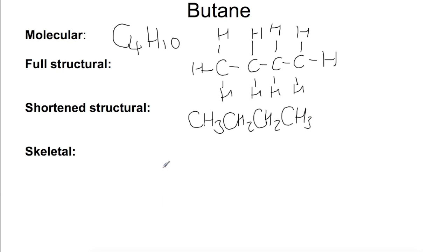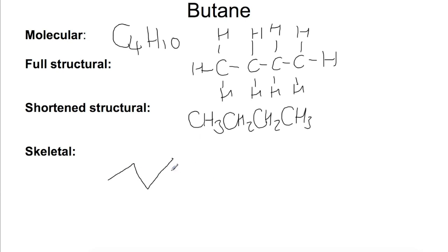For the skeletal formula we take out all of the bonds to carbons and hydrogens and just show them as lines. For butane we have a carbon at the start of the chain joined to the second carbon, and we draw them as zigzag lines — then to the third and then to the fourth. Every time you have a corner or the end of a chain you have a carbon with as many hydrogens as needed to make up the four valency. This is a much more simplified way of writing out our structures for organic molecules.